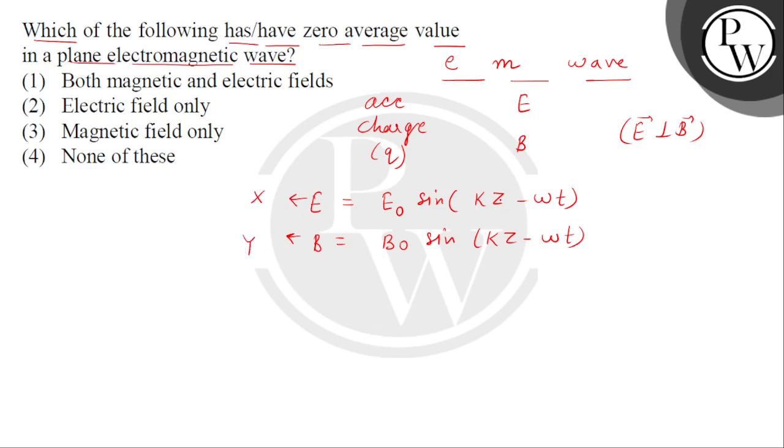So, the electromagnetic wave propagates along the z-axis, which means orthogonal vectors concept applies here. The electric field is perpendicular to the magnetic field, which is perpendicular to the velocity of the electromagnetic wave.